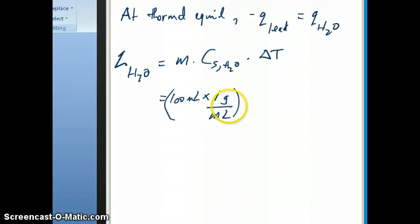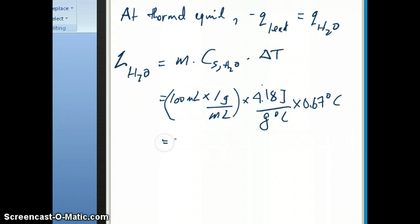And you multiply this by the specific heat of water, which remember is 4.18 joules per gram degrees Celsius. And then you multiply this by the change in temperature, which is final temperature 23.17 minus initial temperature 22.5. And what you get here is 0.67 degrees Celsius. And you multiply all these three quantities together, you got 280.06 joules of energy or heat being absorbed by the water.